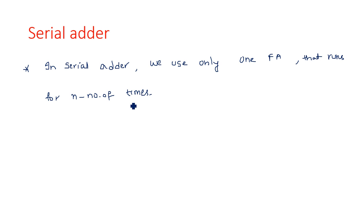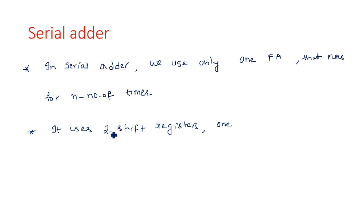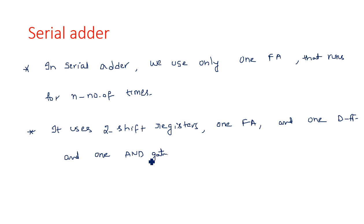We are using only one full adder to work with n number of inputs — the full adder is utilized more than one time. The serial adder uses shift registers: two shift registers, one full adder, one D flip-flop, and one AND gate. These four blocks are sufficient to implement a serial adder.